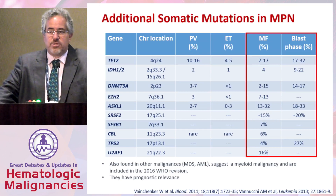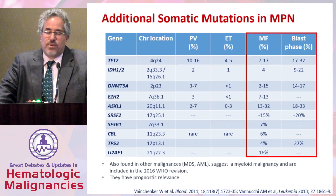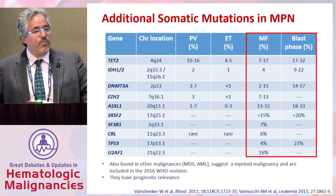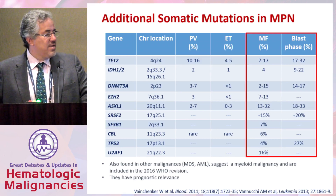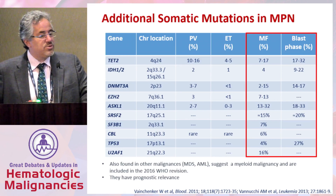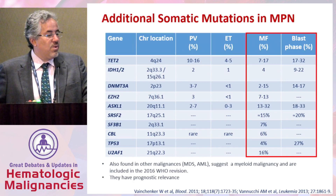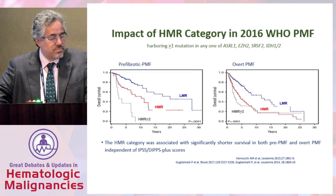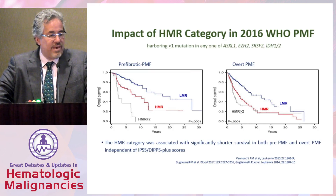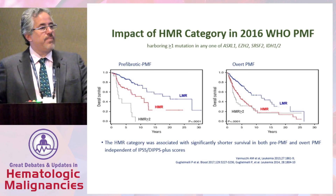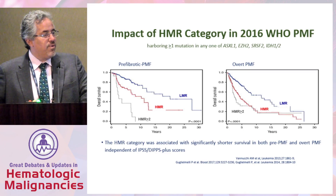What about additional somatic mutations? Now that we can access broader myeloid panels — through Foundation One, Mayo Med Lab, or other commercially available platforms — one can identify a range of additional mutations that repeatedly are found to be bad players, not only in MPNs but also in MDS and other myeloid disorders. ASXL1, IDH1 and 2, EZH2, and TP53 mutations all repeatedly surface as bad actors. The presence of these higher-risk molecular features also predicts worse outcomes in myelofibrosis, and the more high-risk molecular features you have, the worse you do.